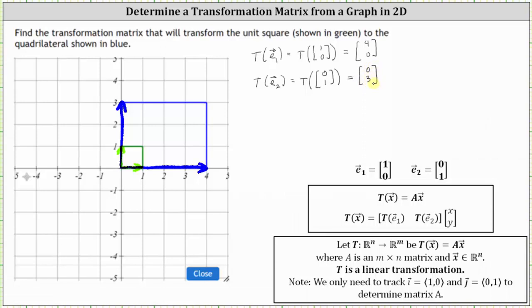Now we have what we need to find the transformation matrix. If we call the transformation matrix A, matrix A will be a two by two matrix. The first column is the transformation of the vector E sub one, and therefore the first column is (4, 0). The second column is the transformation of the vector E sub two, so the second column is (0, 3). This is the transformation matrix the question is asking us to find.